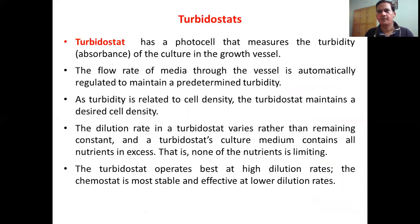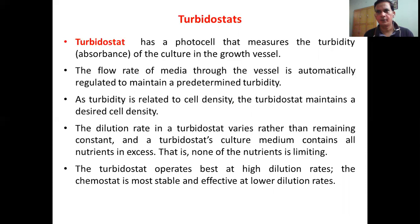The turbidostat uses a photocell that measures the turbidity of the culture in the flow vessel. Depending on how turbid the medium is, it automatically regulates the addition of fresh media. As the bacterial growth increases turbidity to a set value, say 0.5 absorbance units, the system automatically removes some media and adds fresh medium. Since turbidity is related to cell density, the turbidostat is a more automated system.